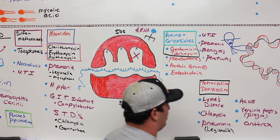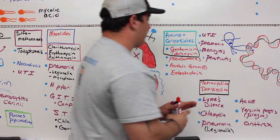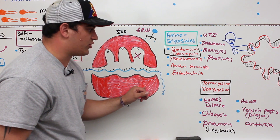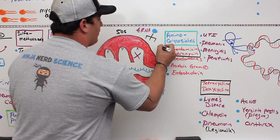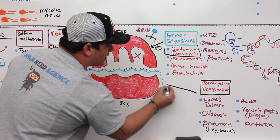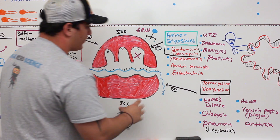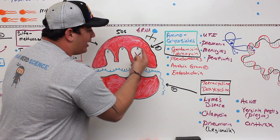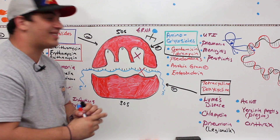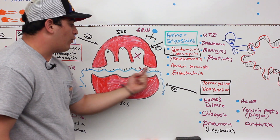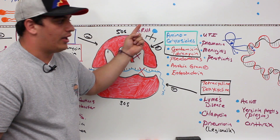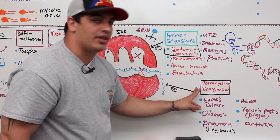Tetracycline and doxycycline have a similar effect to the aminoglycosides, except they target the 30s ribosomal subunit rather than the 50s targeted by both aminoglycosides and macrolides. They bind to the 30s subunit and prevent the tRNA from entering the A site, stopping the ribosome from reading codons in the mRNA and completing protein synthesis. Tetracycline and doxycycline are bacteriostatic antibiotics.